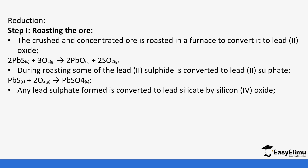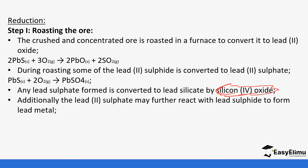Any lead sulfate formed is converted to lead silicate by silicon oxide. There is a series of reactions occurring, and the main impurity in this case is silicon oxide. Additionally, excess lead sulfide reacts with lead sulfate to form lead metal. So lead sulfate reacts with both silicon oxide and lead sulfide, selectively producing the lead metal we want.